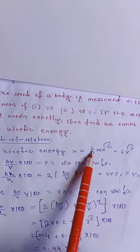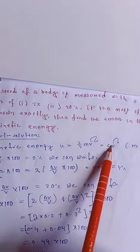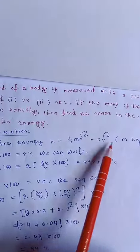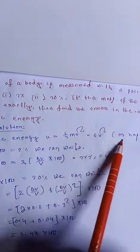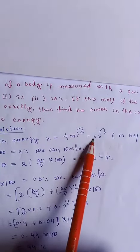The kinetic energy K equals half mv squared. Since mass has no error, half m is a constant, so we focus on v squared.